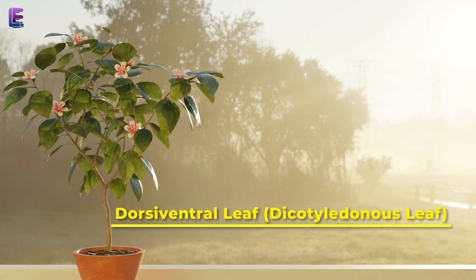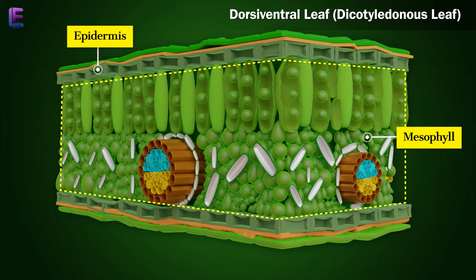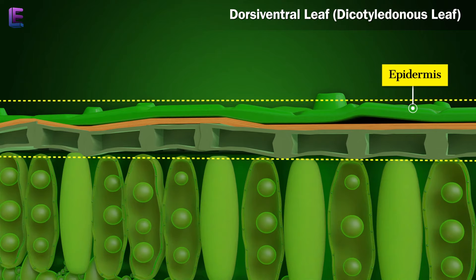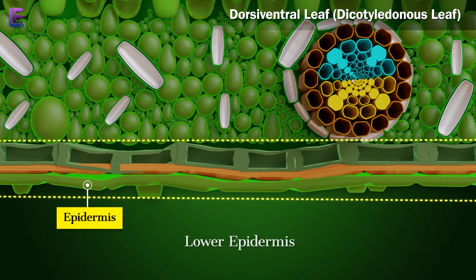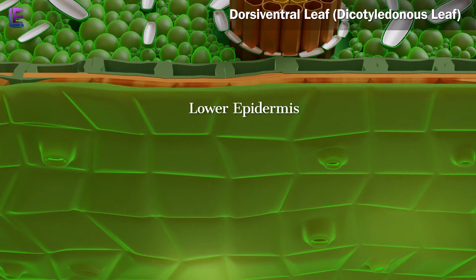Dorsi-ventral Leaf — Dicotyledonous Leaf: The transverse section of a dorsi-ventral leaf shows three main parts: 1. Epidermis, 2. Mesophyll, and 3. Vascular bundles. The epidermis is of equal cell thickness. The upper surface is called upper epidermis, while the lower surface is called lower epidermis. The stomata are more numerous in the lower epidermis than the upper.